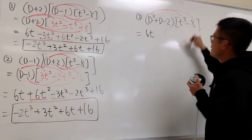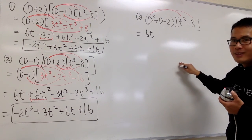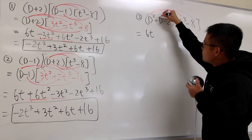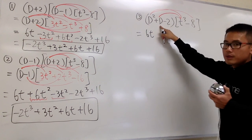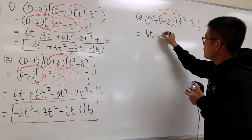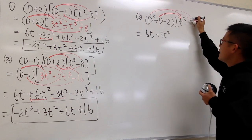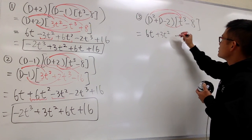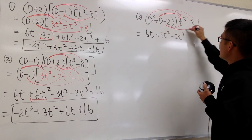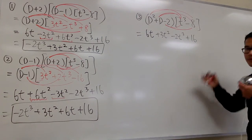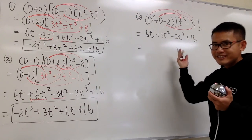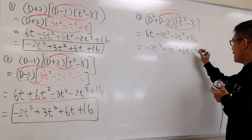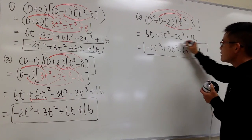Now for the regular D part: differentiating t³ gives plus 3t², and differentiating negative 8 gives 0. The negative 2 is just a multiplier: negative 2 times t³ gives negative 2t³, and negative 2 times negative 8 gives plus 16. So rearranging: negative 2t³, plus 3t², plus 6t, plus 6t — that is the result for number 3.